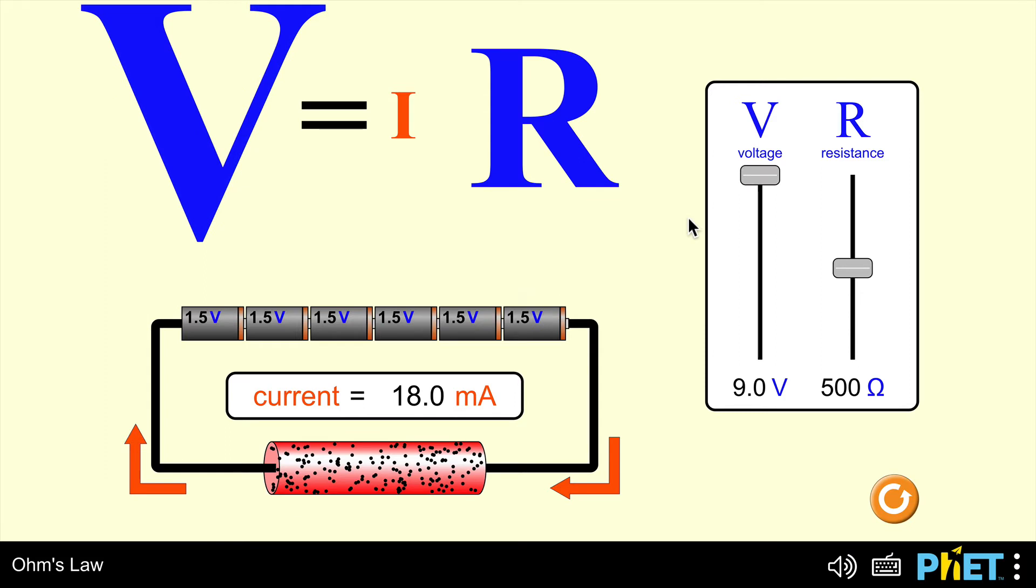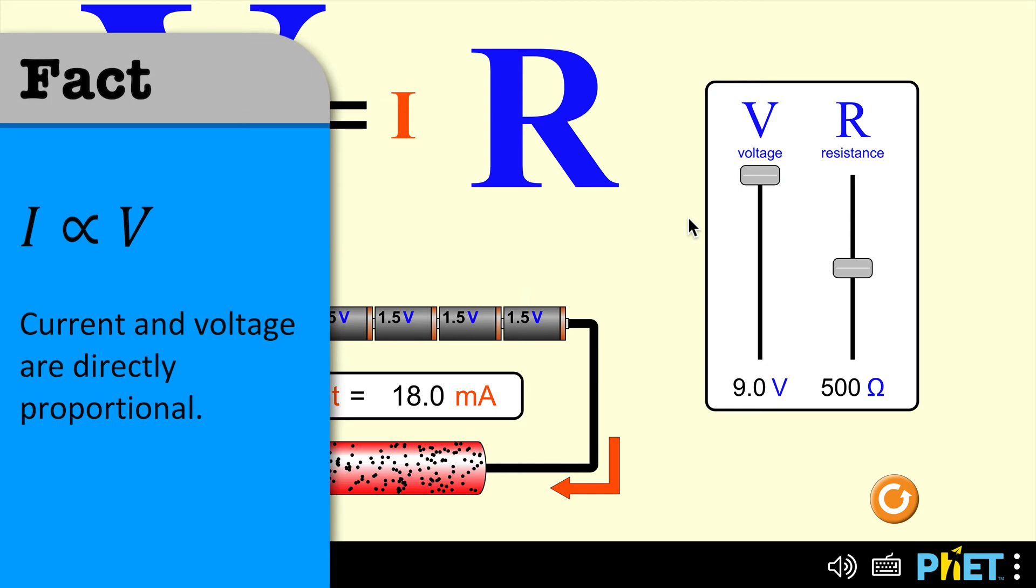In fact, I've doubled the voltage, and I've ended up with twice the current. So I've doubled the voltage, doubled the current. That means that voltage and current are what's called directly proportional. When one of them's doubling, the other one's doubling.